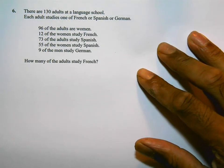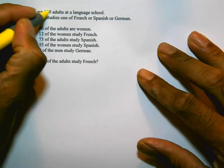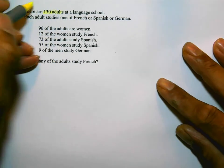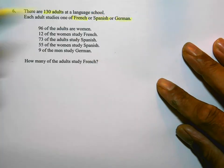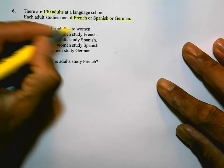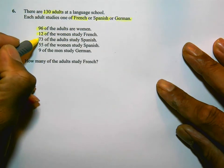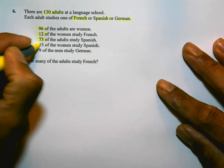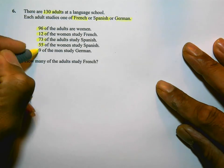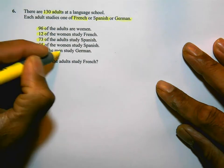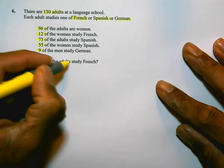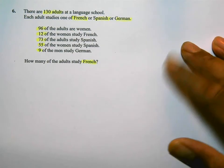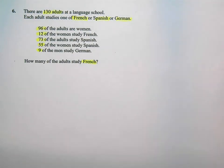There are 130 adults at a language school. The adults study one of French, Spanish, or German. 96 of the adults are women, 12 of the women study French, 73 of the adults study Spanish, 55 women study Spanish, and 9 men study German. How many of the adults study French? As I'm reading this question, I'm starting to figure out what it's wanting me to do. In fact, this question is a two-way table question and wants me to organize this information.